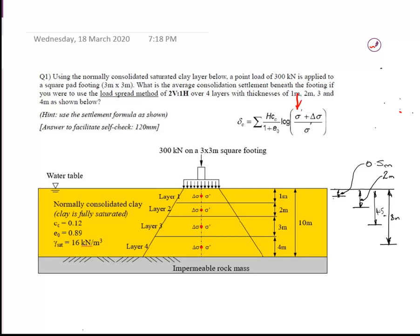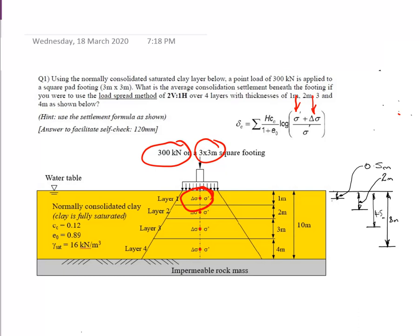In the consolidation equation we need sigma prime, the effective overburden pressure, and delta sigma, the increase in pressure from the load. We could calculate sigma prime at the surface and at depth, then average them — but it's much easier to just work at the midpoint of each layer, which gives the average directly.